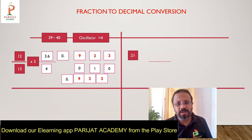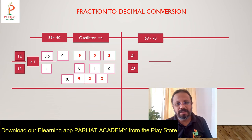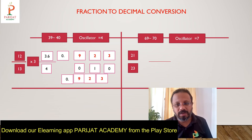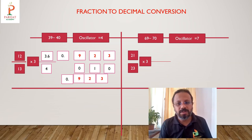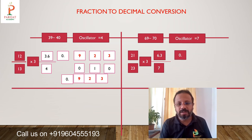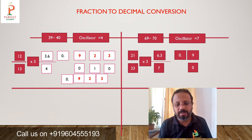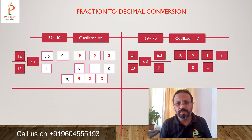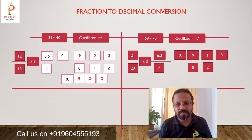Next: 21 upon 23. Since 23 threes are 69, which is near 70, the osculator is 7. We work with 6.3 upon 7. 7 nines are 63, remainder is 0. Gross dividend is 09. 7 ones are 7, remainder is 2. Gross dividend is 21. 7 threes are 21, remainder is 0. Our answer for 21 upon 23 is 0.913.